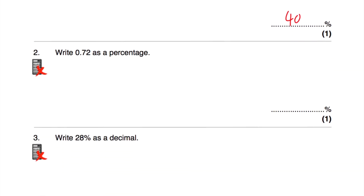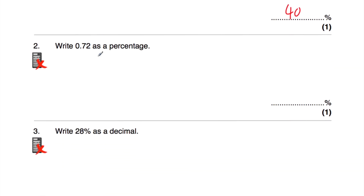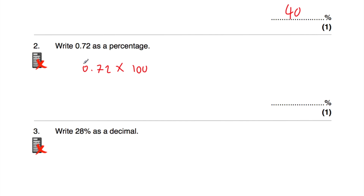Question number two says write 0.72 as a percentage. You might just be able to spot it's 72%, and that's useful if you can do that. If you've forgotten, just take the decimal number 0.72 and times it by 100, so we're moving the digits two columns to the left. The 7 in the tenths moves into the ones and then into the tens. The 2 moves into the tenths and then into the units, so the answer is 72%.